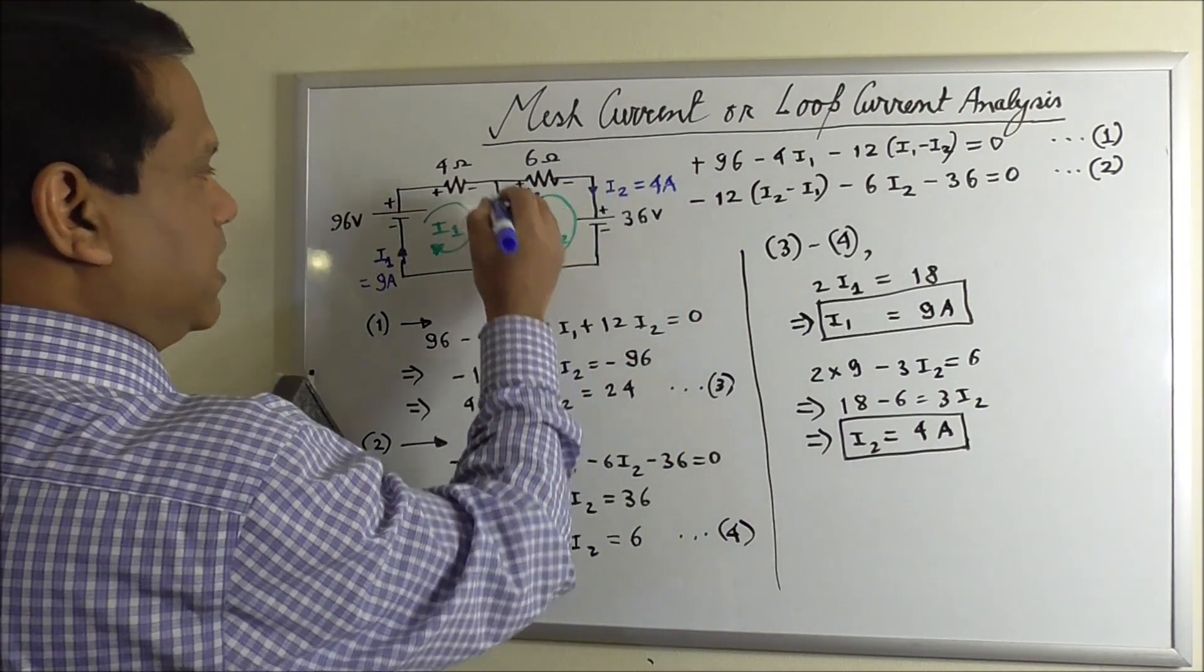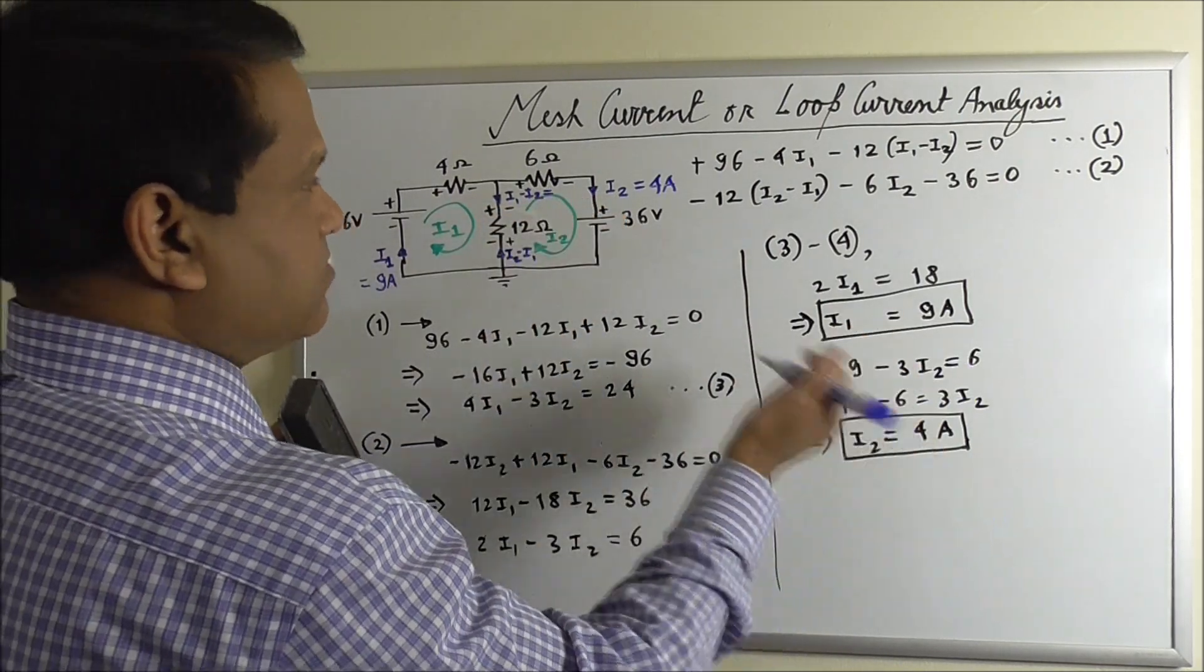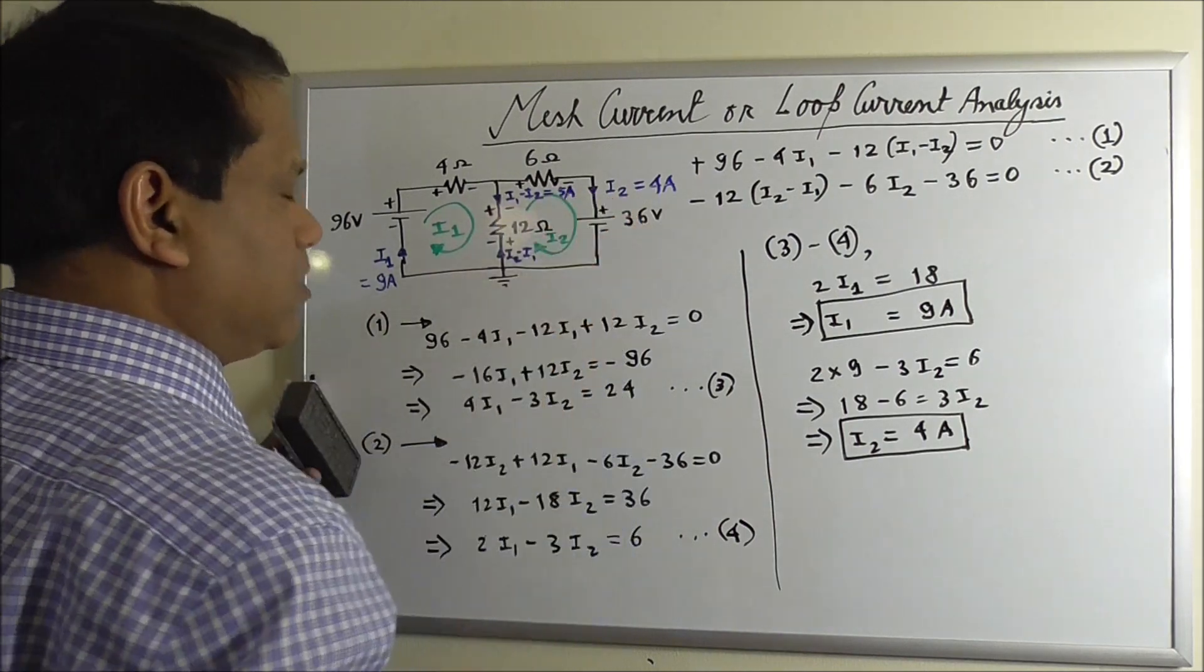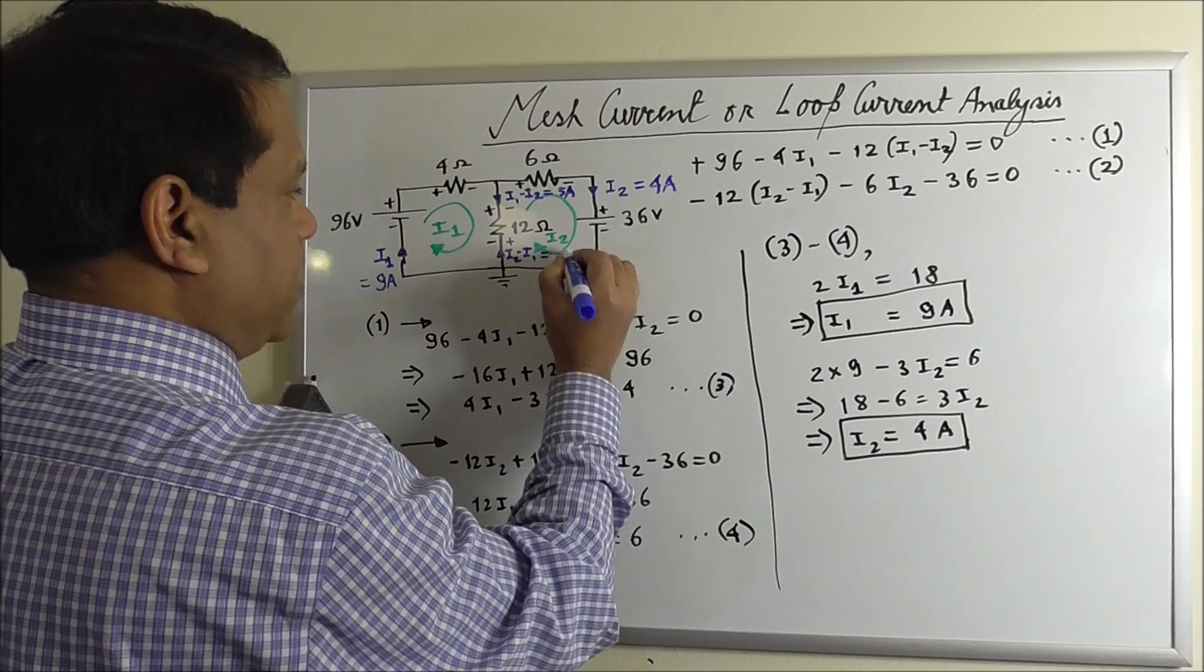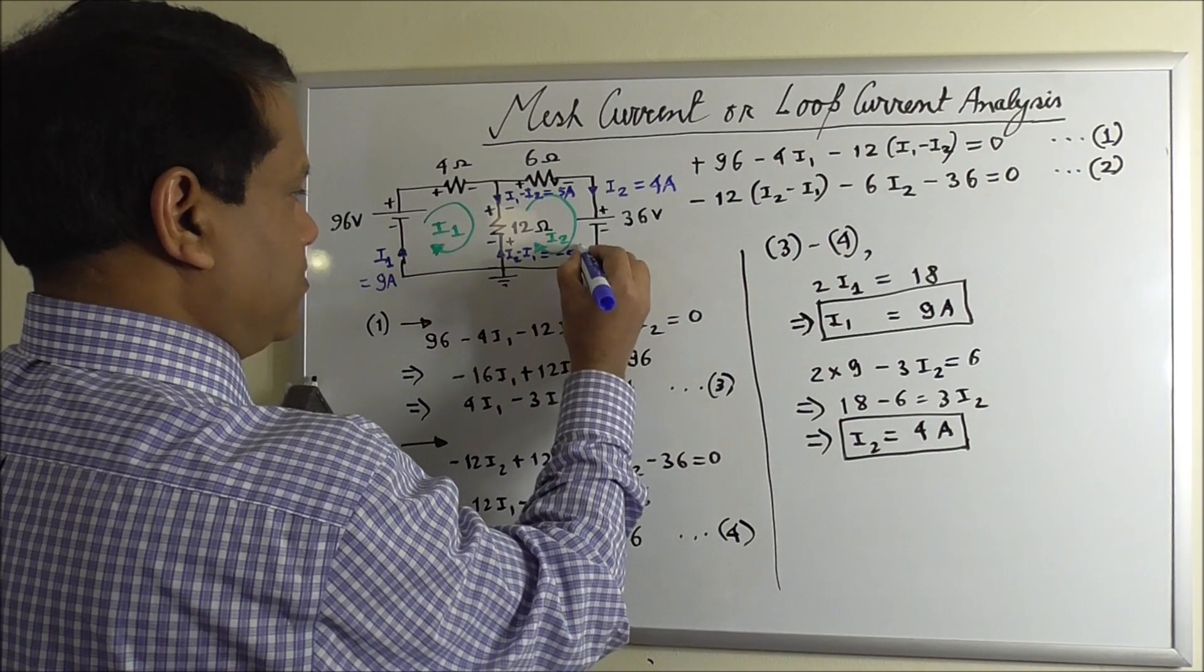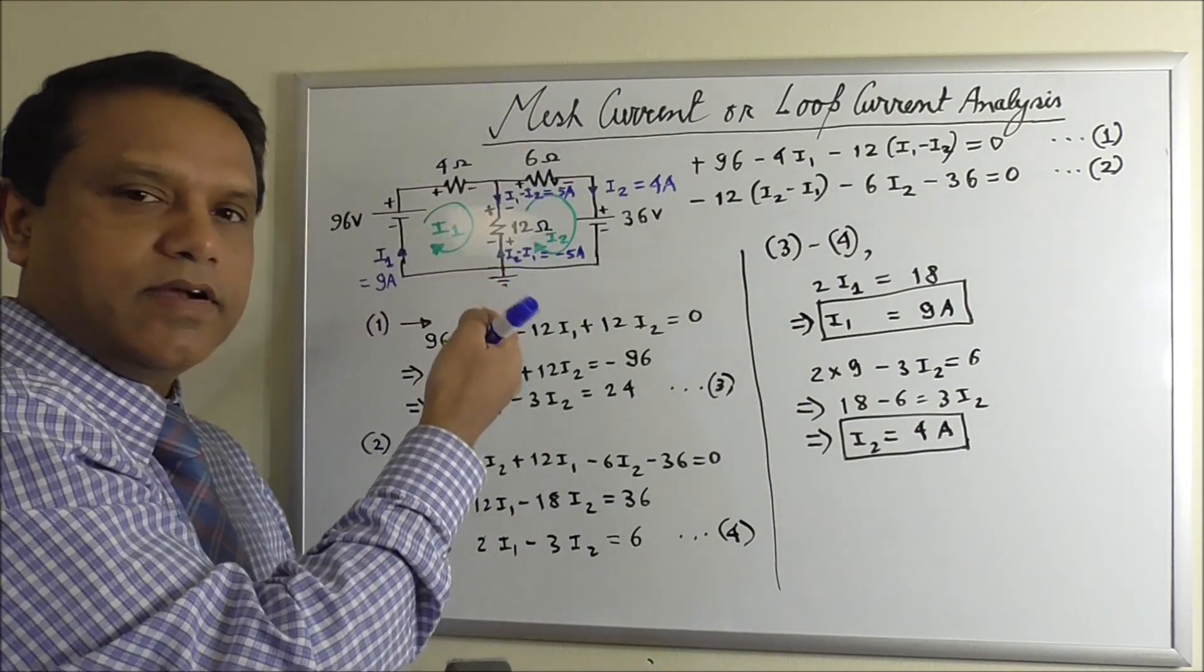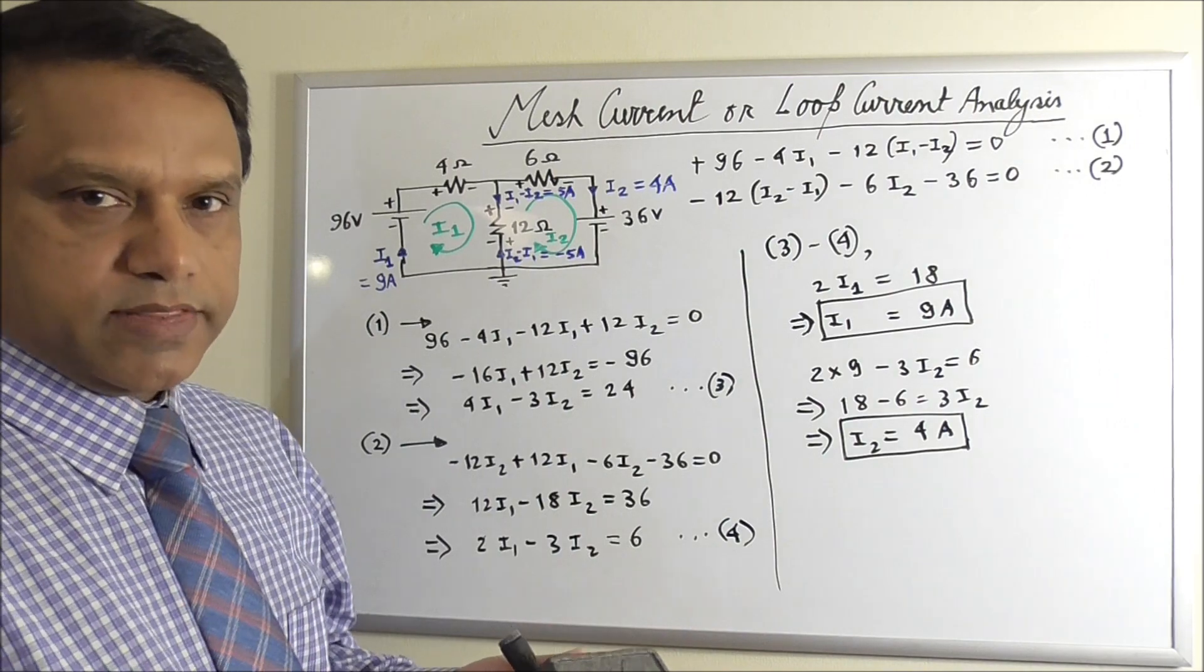And this current I1 minus I2 downward will be 9 minus 4 is 5 ampere. Or you can say upward current I2 minus I1 will be minus 5 ampere. Both are correct. Downward current is 5 ampere and upward current is minus 5 ampere.